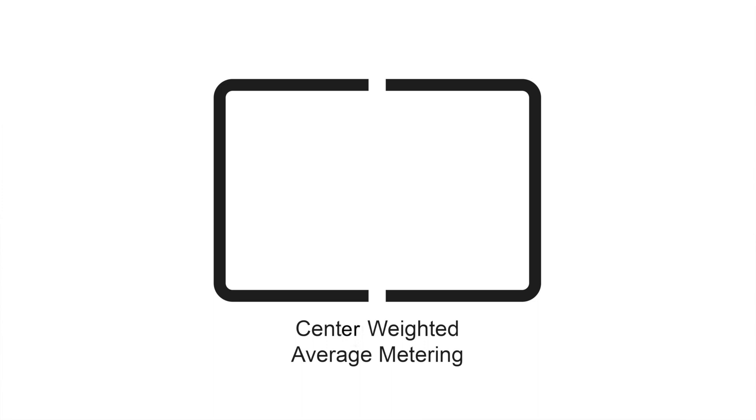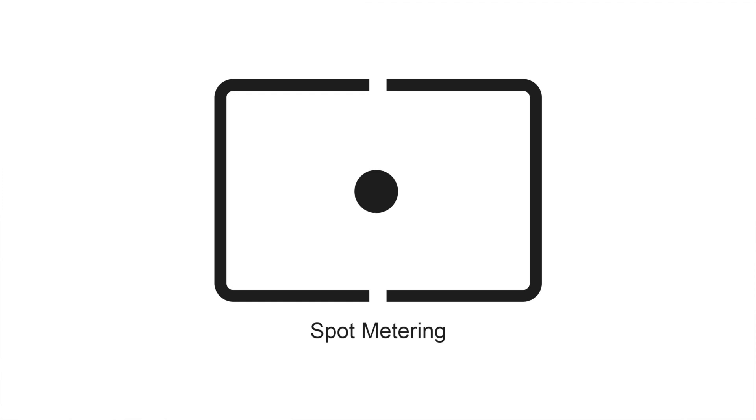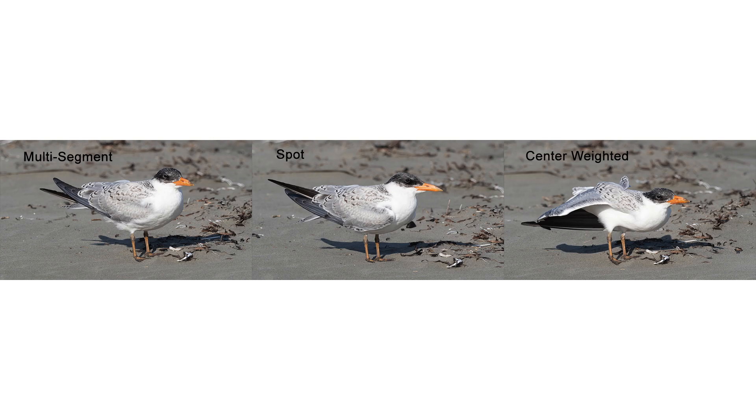The third mode is center weighted or average metering. The camera places emphasis on the center of the frame without paying any attention to where your focus point is. So if the bird is outside the center circle, it won't expose as accurately as ESP/evaluative/matrix metering. It can work in certain situations, but most photographers will use either evaluative/ESP/matrix or spot metering. Spot metering gives specific control over where you meter, while evaluative metering covers the general scene with emphasis on the focus point.